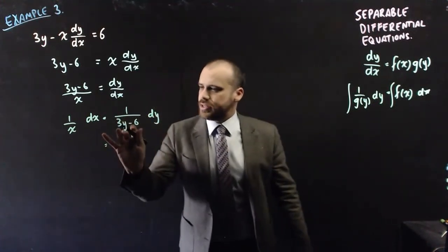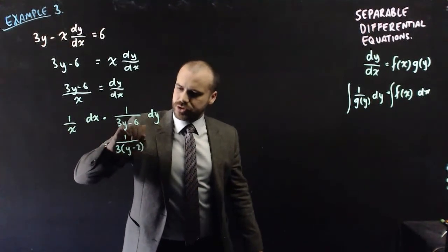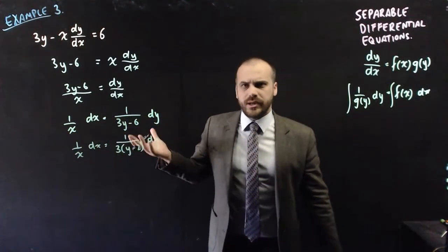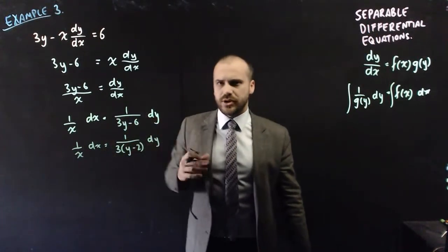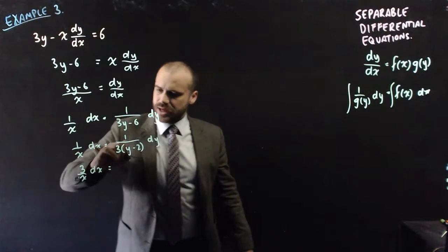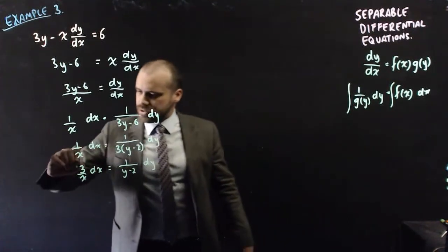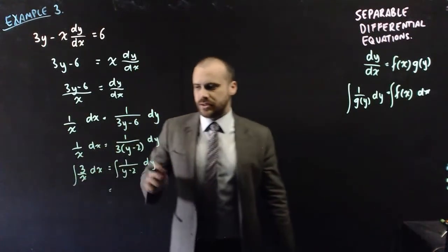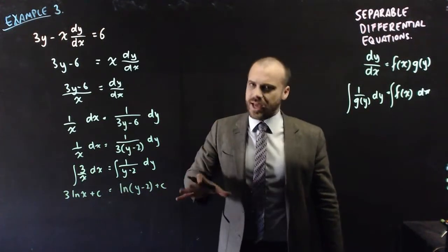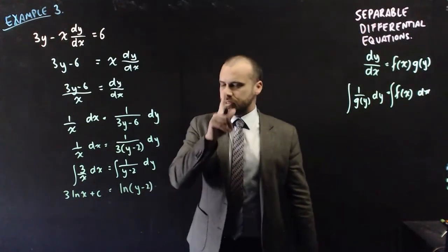To make integration easier, rewrite 1 over (3y minus 6) as one-third times 1 over (y minus 2). Then multiply both sides by 3, giving 3 over x with respect to x equals 1 over (y minus 2) with respect to y. Both sides are straightforward to integrate: 3 ln(x) plus c equals ln(y minus 2) plus c. Combining constants gives a single c on one side.